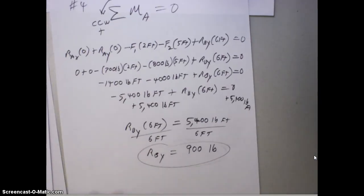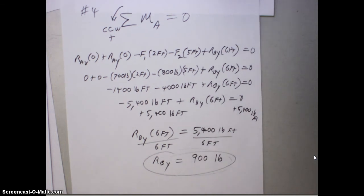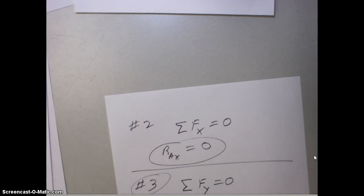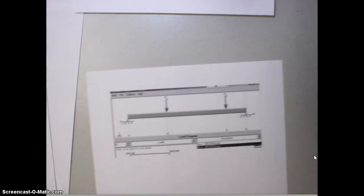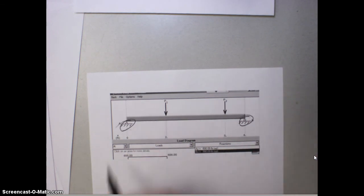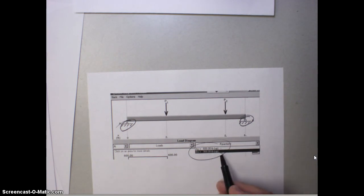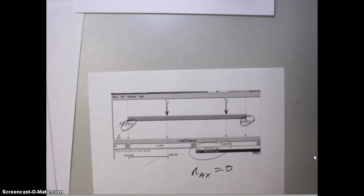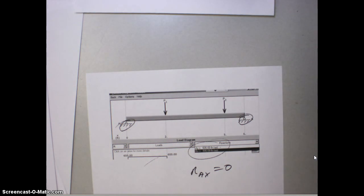Now, one of the things I should do is to plug those numbers into MD solids and see what the reaction forces here and here are going to be. And if you look under reactions in the pull down menu, you'll see that you have the 600 pounds up, the 900 pounds up. MD solids on a beam will not do lateral forces. So, we have to go ahead and realize on MD solids that RAX equals 0. So, that covers all our three unknowns in our problem. Hope you have good luck on solving reaction forces on a beam.